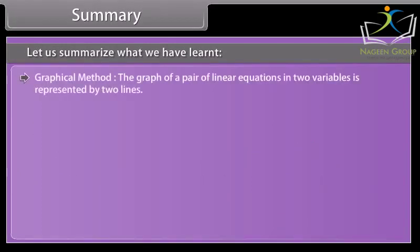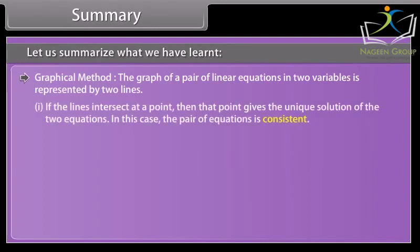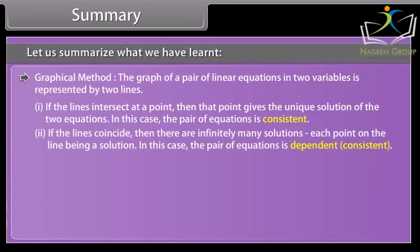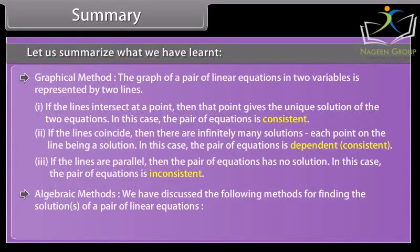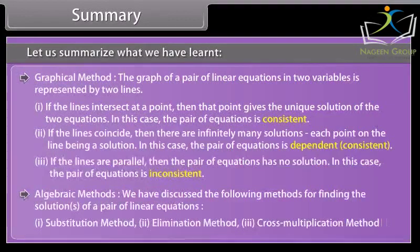Graphical method summary: If the lines intersect at a point, the pair is consistent. If the lines coincide, there are infinitely many solutions — the pair is dependent and consistent. If the lines are parallel, there is no solution — the pair is inconsistent. Algebraic methods discussed include: (1) substitution method, (2) elimination method, and (3) cross multiplication method.